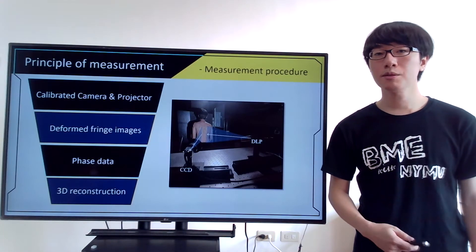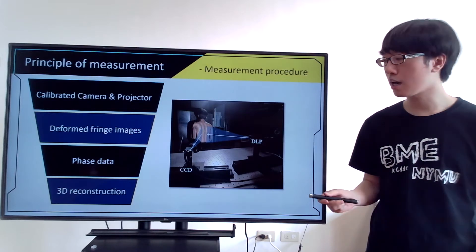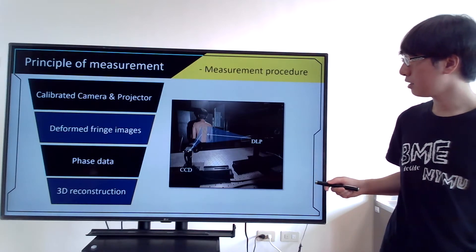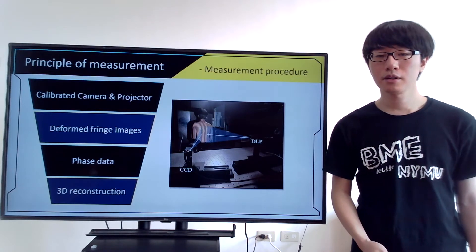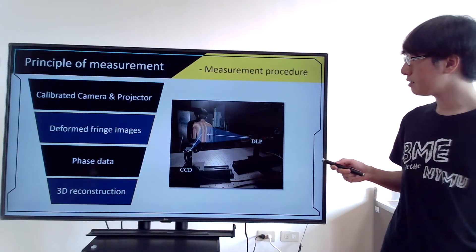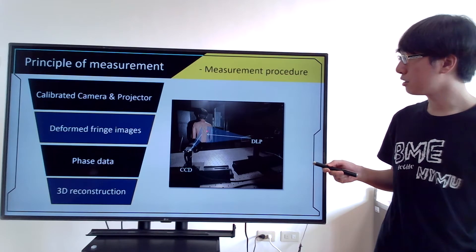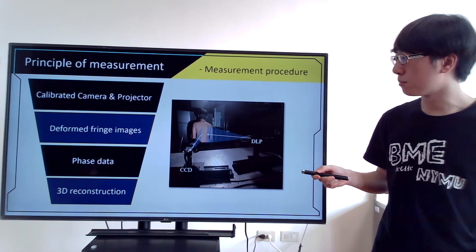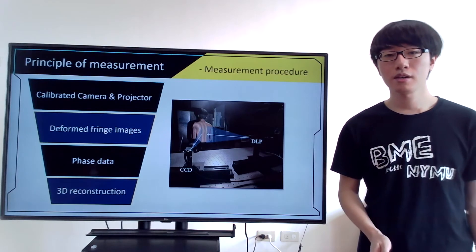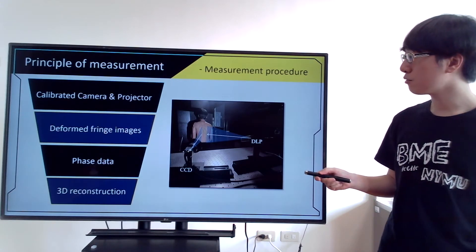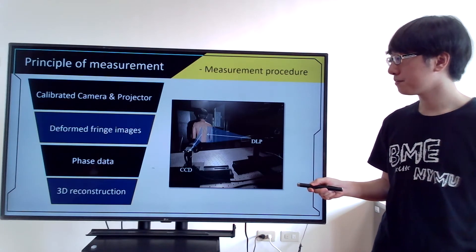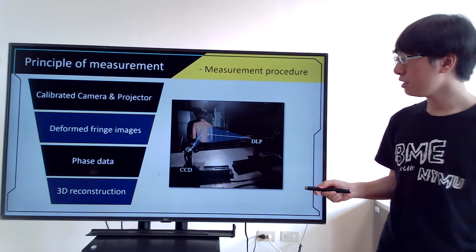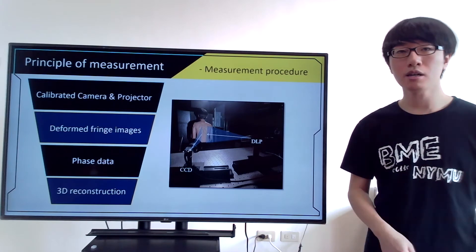Our system is simply composed of a CCD camera, a DLP projector, and a computer. The projector casts seven phase-shifting fringes to the target. Then the camera captures the deformed fringe images. The images are then transformed into phase data, and after unwrapping the phase data, the 3D surface of the target can be acquired.